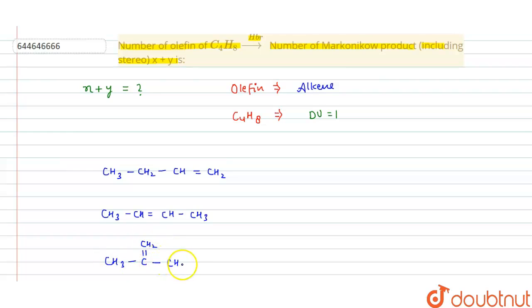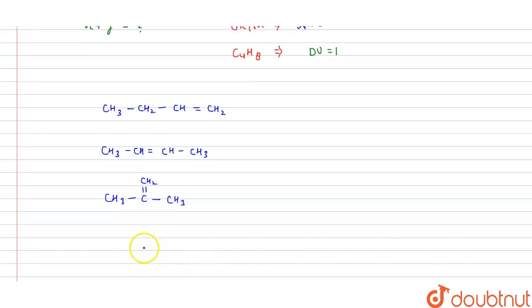Now the third one is CH3-C double bond CH2 single bond CH3. Now the last structure, one more structure is cyclobutane. How to make the cyclobutane? Cyclobutane is like this, this is cyclobutane.